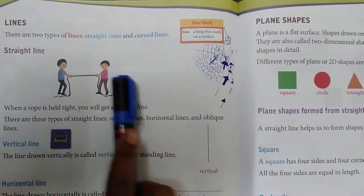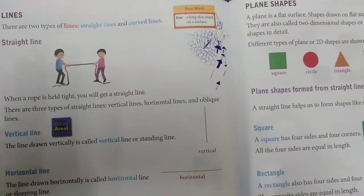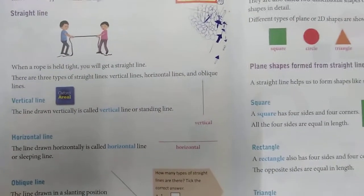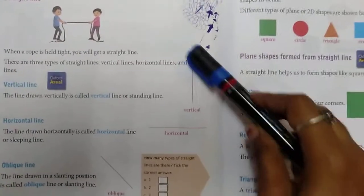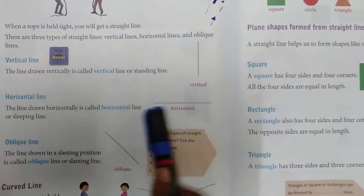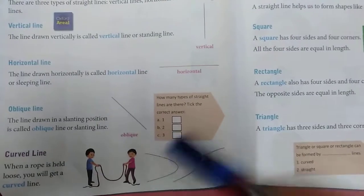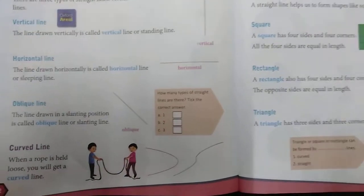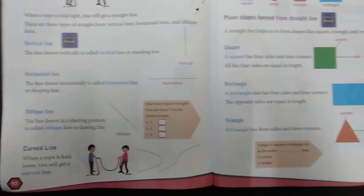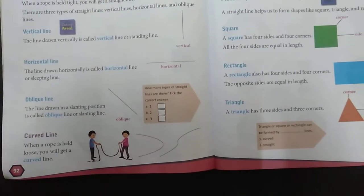Straight line means sleeping line or standing line — that is, vertical line or horizontal line. Vertical line is otherwise called standing line. Horizontal line is otherwise called sleeping line. One more: oblique line, which means slanting position — that is called oblique line. Then curved line — any curve shape is called a curved line.